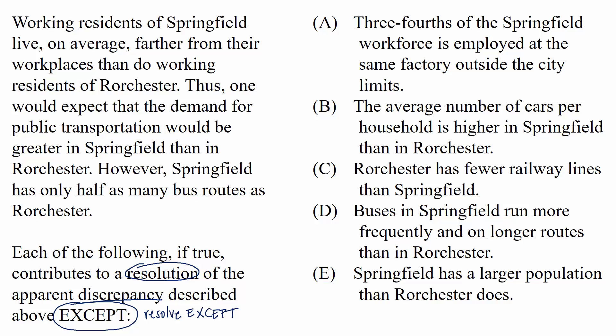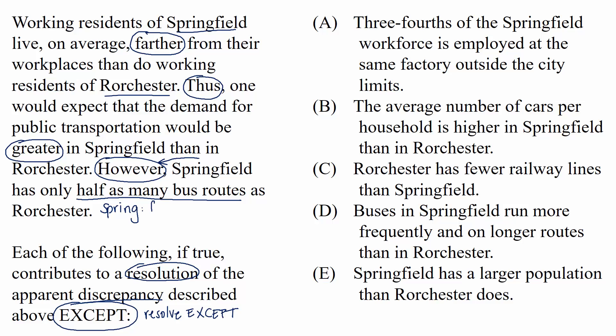The passage reads: working residents of Springfield live, on average, farther from their workplaces than do working residents of Rochester. Thus, one would expect that the demand for public transportation would be greater in Springfield than in Rochester. However, Springfield has only half as many bus routes as Rochester. Just like with explain questions, our first job in resolve questions is to describe the situation that doesn't seem to make sense.